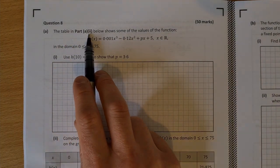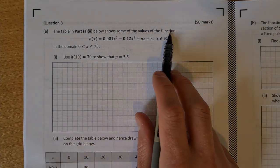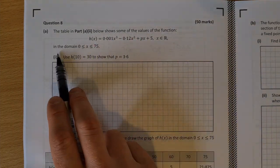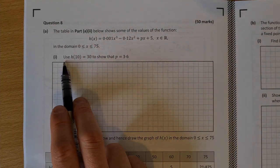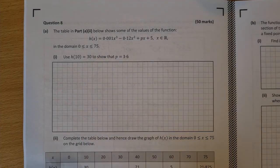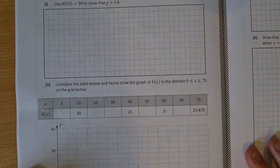The table in part A2 below shows some of the values of the function. Here's the function in the domain 0 to 75. Use h of 10 equal to 30 to show that p is equal to 3.6. There's the table there.